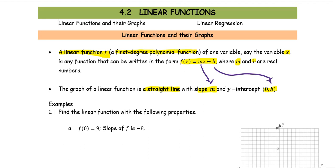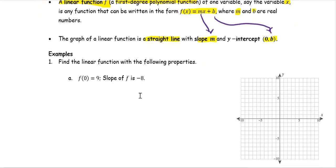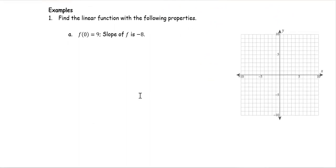Let's look at the example. Problem 1: Find the linear function with the following properties. In part a, f(0) = 9, and the slope of the function f is -8.